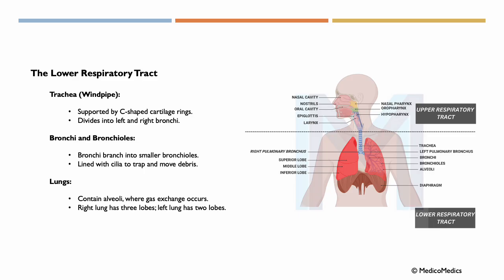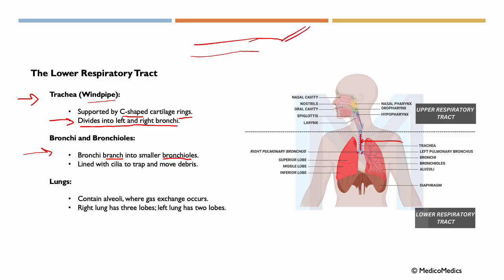Now let's look at the lower respiratory tract. Here we have the trachea, or the windpipe — this structure is supported by C-shaped cartilage rings. As it goes down, the trachea divides into the left and right bronchi. The bronchi then branch into smaller bronchioles. The bronchi and bronchioles are lined with cilia to trap and move debris.